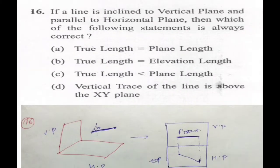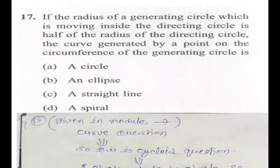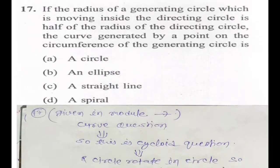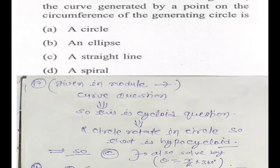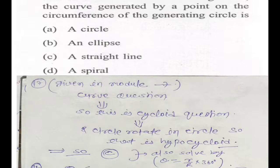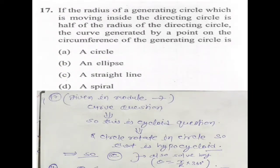Question 17: if the radius of the generating circle is moving inside a directing circle — this is a hypocycloid question. In module 7 I gave proper coverage of curves. In hypocycloid there is one case where theta equals r/R × 360 — a very important formula. Using this, you get theta equal to 180 degrees, so you will get a straight line.